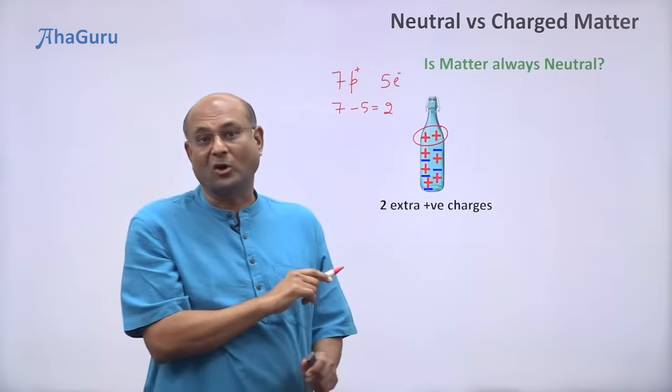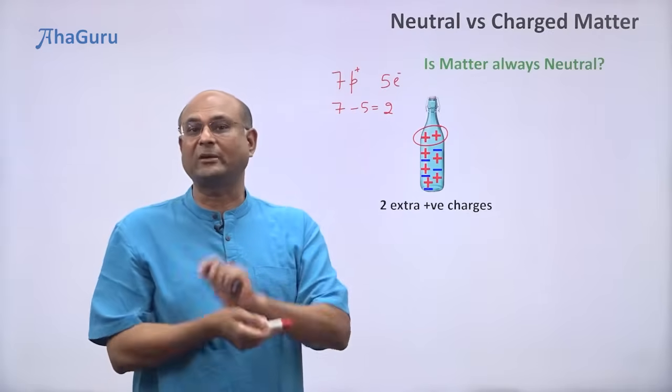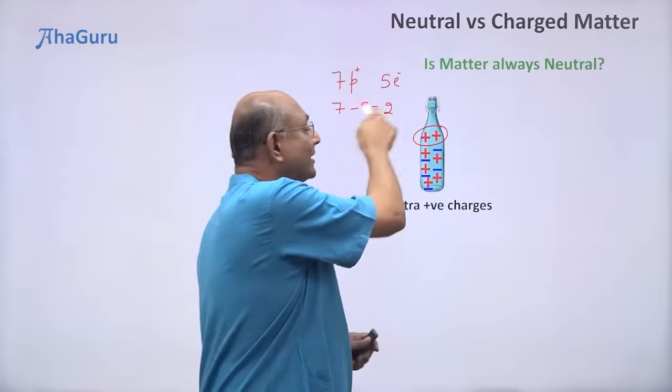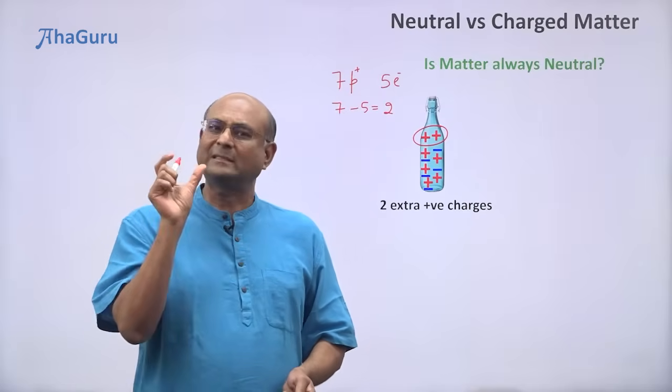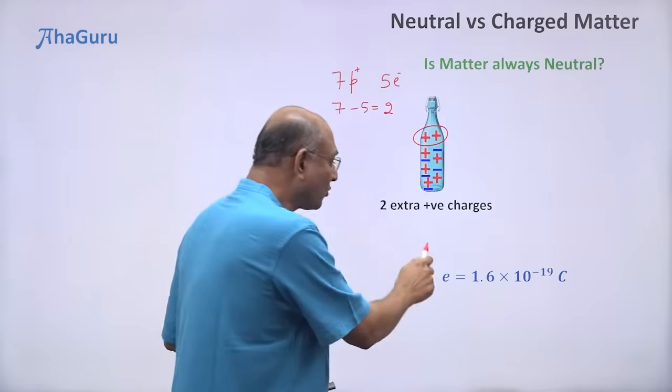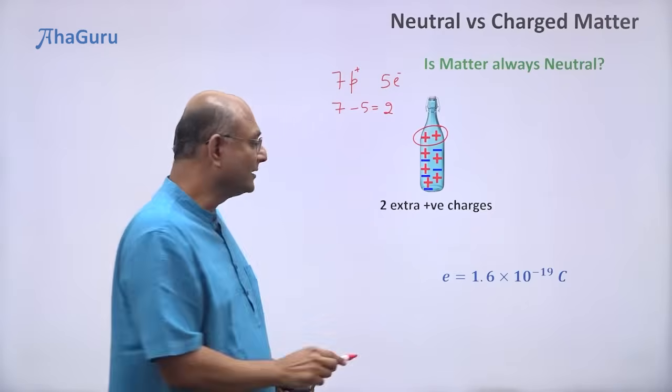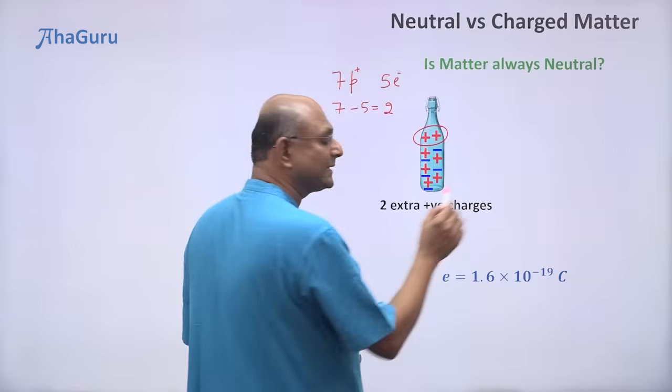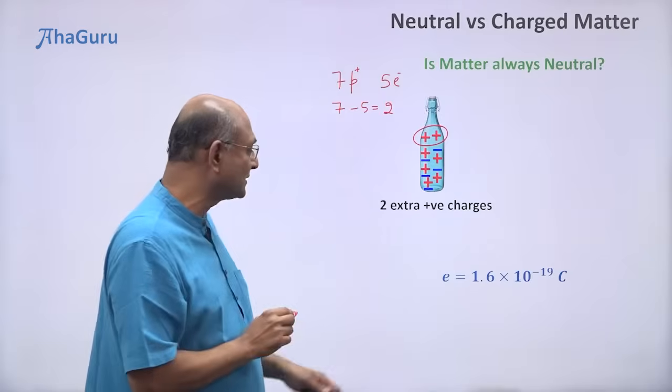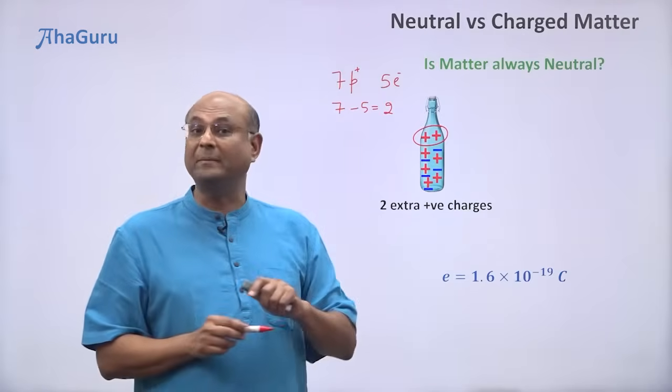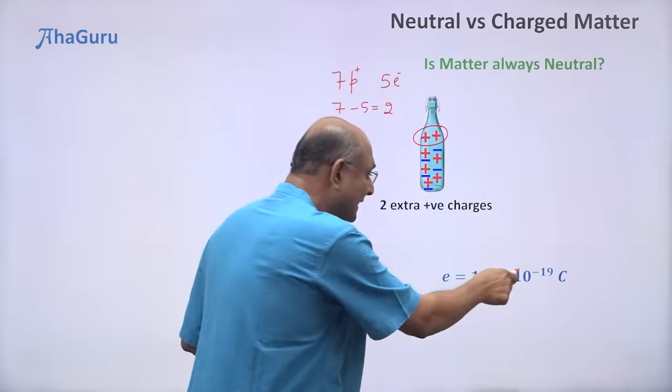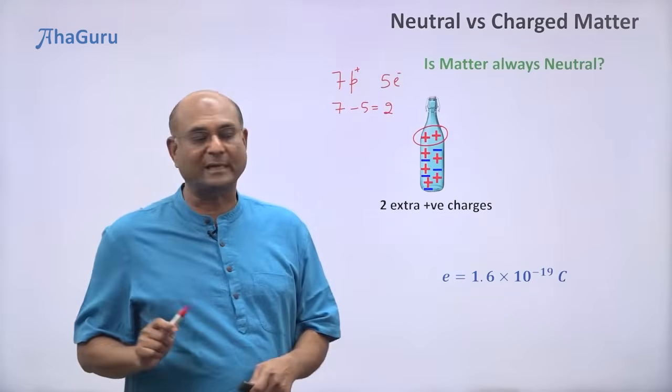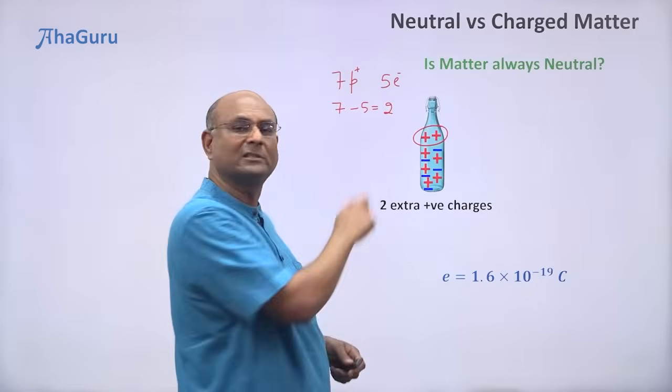Now, the charge on a proton is plus 1.6 × 10^-19. Charge on an electron is minus 1.6 × 10^-19. That's a fundamental unit. So we like to call it with a letter E. So E basically stands for 1.6 × 10^-19 coulombs. Don't confuse this E with e minus. E minus stands for electron. E stands for this fundamental unit of charge.